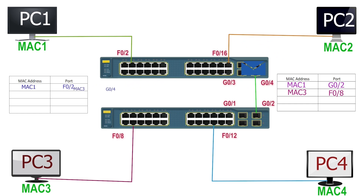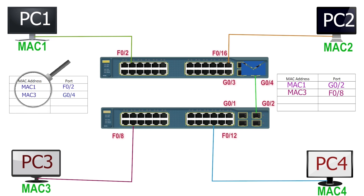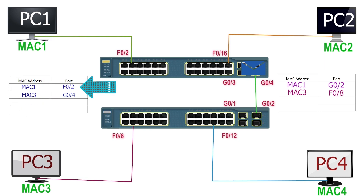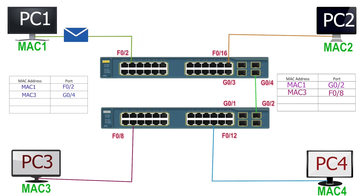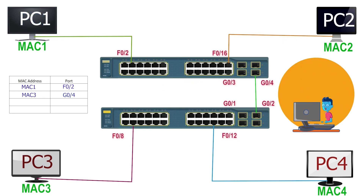The frame reaches S1 on port G0-4. S1 adds an entry associating port G0-4 with MAC3. Since the CAM table has an entry for MAC1, S1 forwards it from port F0-2, and the frame reaches PC1. Switches repeat this process for all frames. However, if we configure an EtherChannel, this process will change.